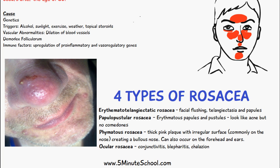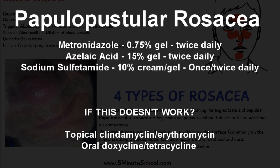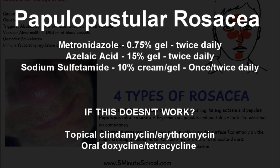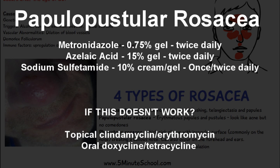For papulopustular rosacea, the standard topical medications like metronidazole and sodium sulfacetamide are used first. If those are not effective, topical clindamycin or erythromycin may be tried, and if there is still no response, a course of tetracycline or doxycycline may be prescribed depending on how the patient is responding to previous medications.